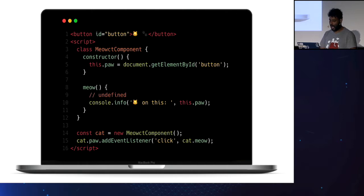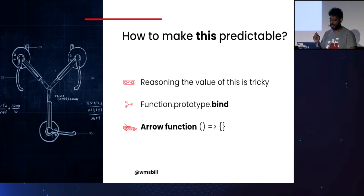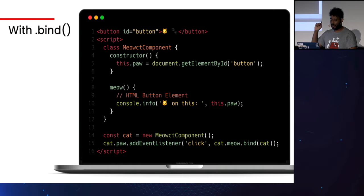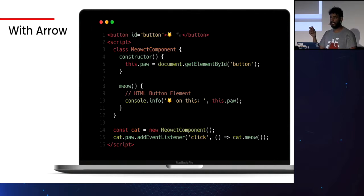So how do we make `this` predictable? Understanding the value of `this` in JavaScript can be tricky, but we can make it predictable by using `Function.prototype.bind` or arrow functions. The `bind` method permanently binds the function to the first given parameter, which is the context. Arrow functions keep the value of the lexical `this` of the outer scope. In the previous example, on line 15 I just change `cat.meow` to `cat.meow.bind(cat)`. This returns a new function permanently bound to `cat`, so the code runs as expected. With an arrow function, we can do the same — it just doesn't create a new `this`; it takes `this` from the surrounding context.